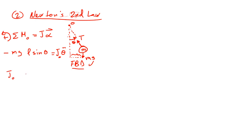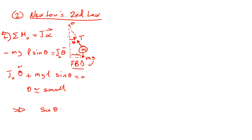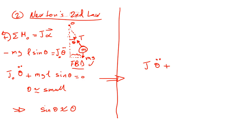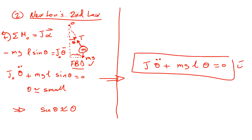Rearranging: J_O theta-double-dot plus MGL sine theta equals zero. This is the equation of motion. We need to linearize — remember theta is small, therefore sine theta equals theta. So the linearized equation of motion is: J_O theta-double-dot plus MGL theta equals zero.